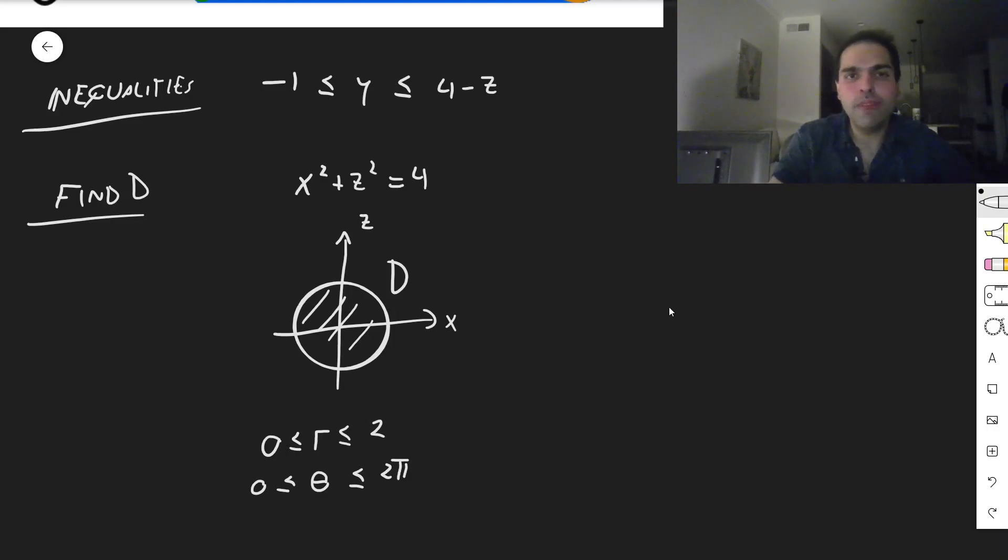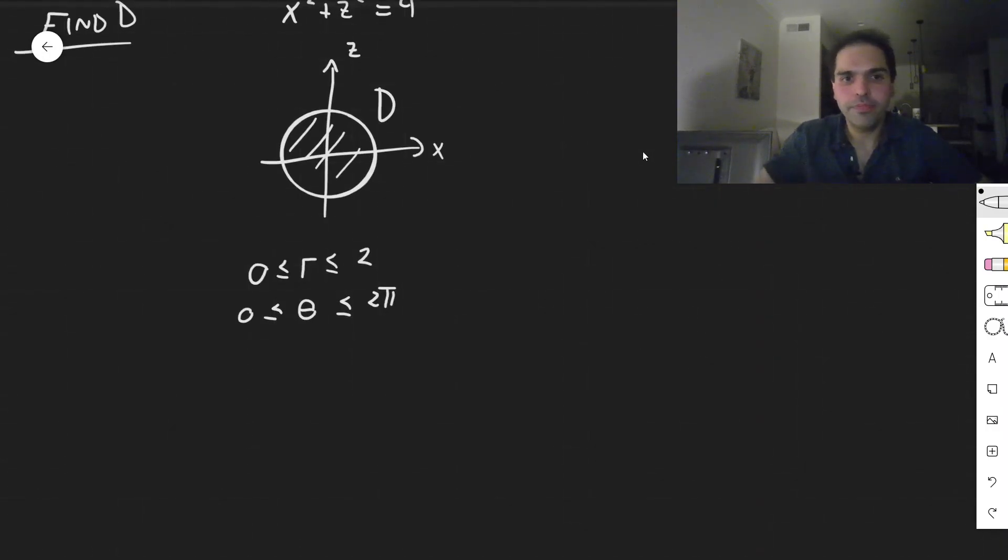And lastly, remember, we had this y, it's between minus 1 and 4 minus z. But here, again, you have to decide, do you want polar? Do you want Cartesian? Well, here, I think polar wins. So you have to write 4 minus z in terms of polar, which is just 4 minus r sine of theta. Because you see, z plays a new role of y here. So it is r sine of theta.